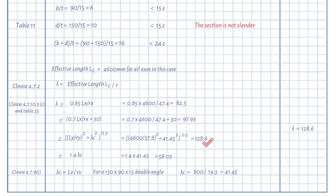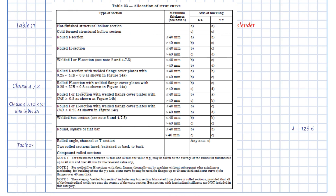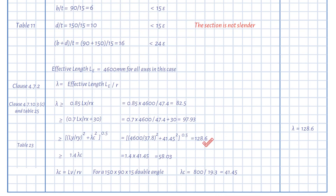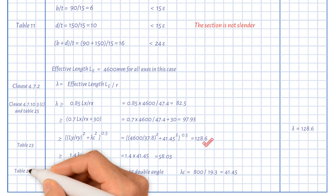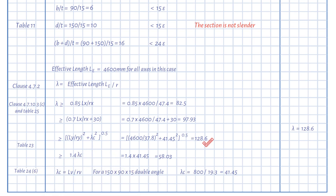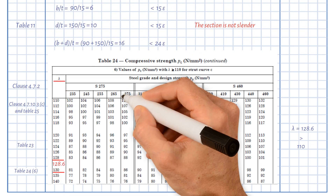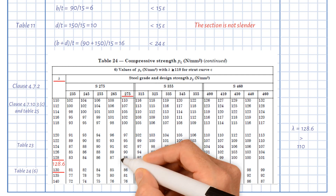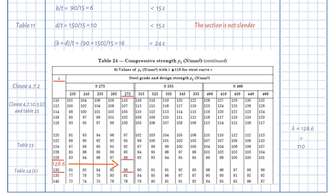Next, we need to select a suitable strut curve from Table 23 — we use strut curve c for all axes. Using Table 24.6, since lambda of 128.6 is greater than 110, and using S275 steel with a design strength of 275 N/mm², we interpolate a compressive strength pc equal to 87.4 N/mm².